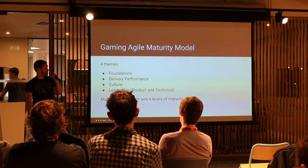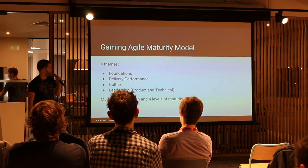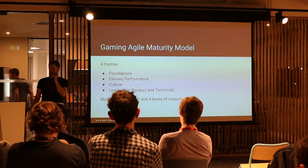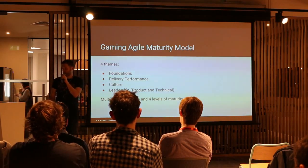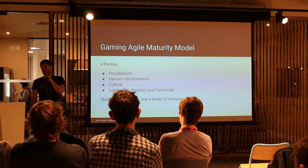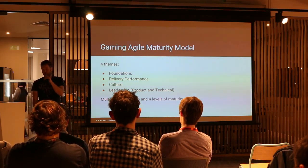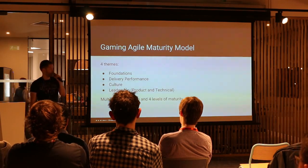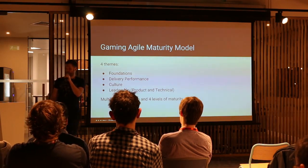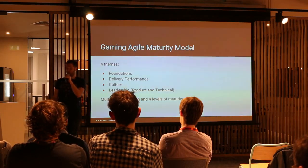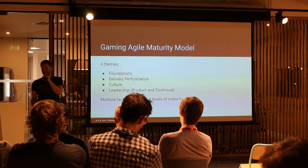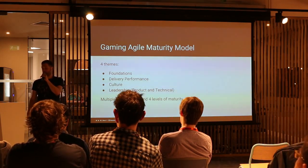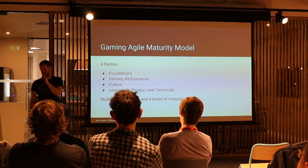We set about developing the agile maturity model and put together four themes. These were: Foundations — essentially the agile hygiene factors, squad size, whether your process fundamentals are correct, and if you have the right level of facilitation in your teams. Delivery performance — your capability around planning, forecasting, value focus, and data-driven decision making. Culture — trust and respect amongst team members and between squads, collaboration, teamwork, and transparency. And Leadership — from a technical and product perspective, their presence and engagement within the squads, and their backup and roadmap for managing the vision and goals.